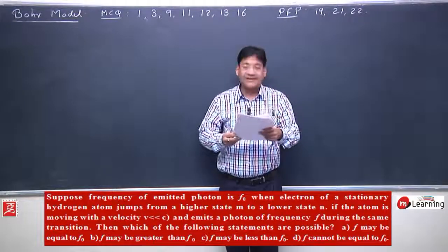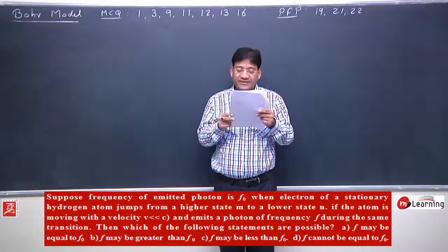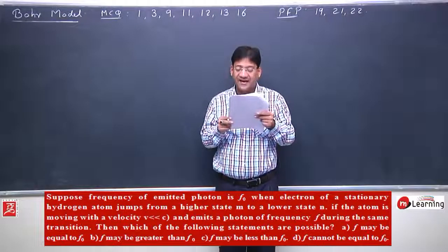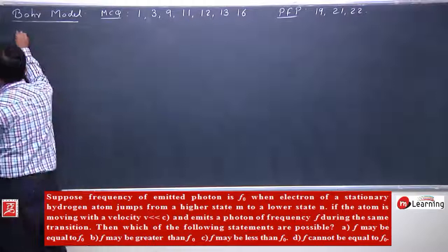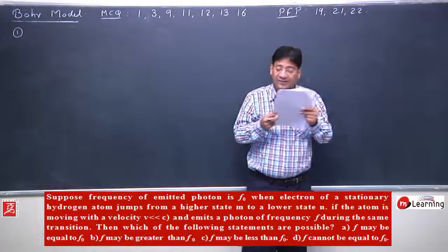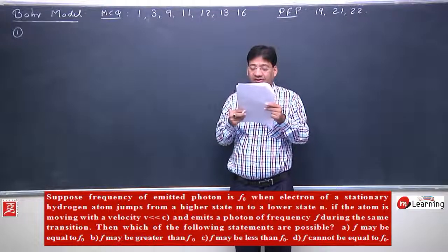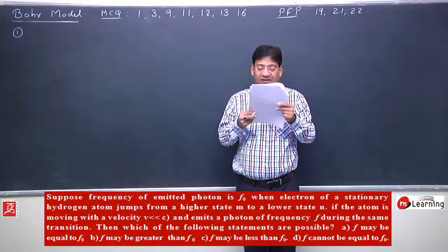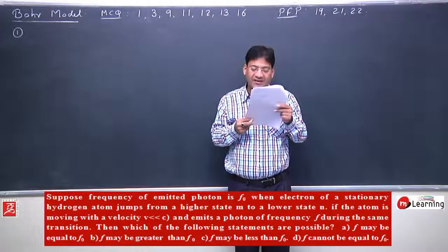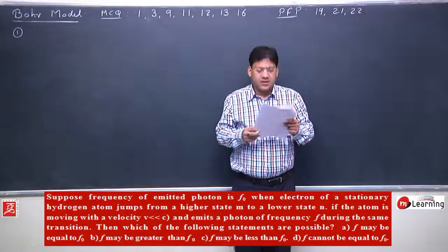Now let's start discussing the first multiple choice objective. Suppose frequency of emitted photon is F0 when electron of a stationary hydrogen atom jumps from higher energy state M to lower state N. If the atom is moving with velocity V, very very small as compared to C, and emits a photon of frequency F during the same transition, then which of the following statements are possible?